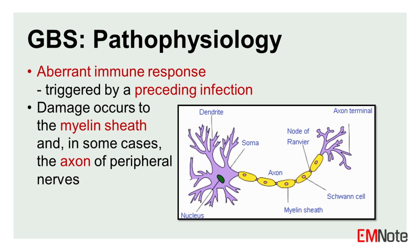The pathophysiology of Guillain-Barré syndrome involves an aberrant immune response, often triggered by a preceding infection. This immune response leads to damage to the myelin sheath and, in some cases, the axon of peripheral nerves.